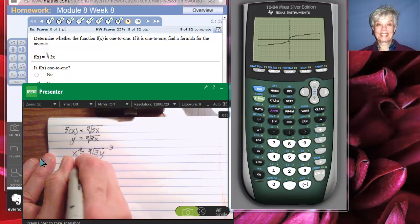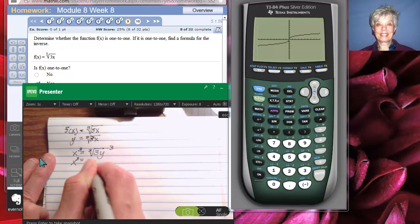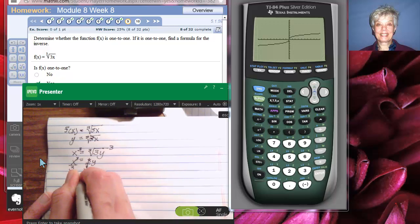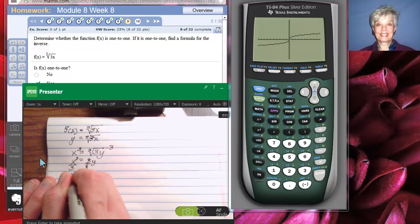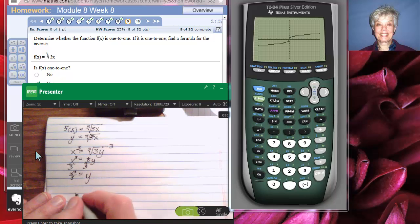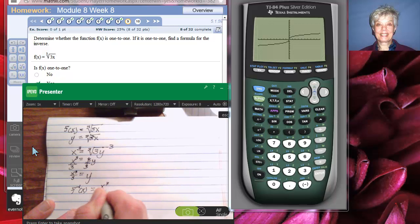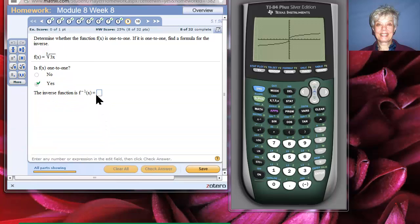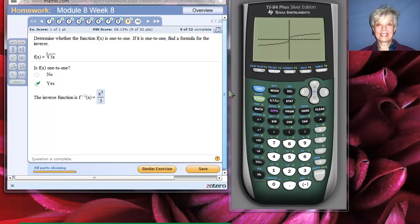So, I'll have x to the third equals 3y, then divide by 3 in order to get y by itself. Isolate y. y equals x to the third over 3. In other words, to write it the way my math lab wants you to write it, f inverse of x is going to equal x cubed divided by 3. I'll have x cubed divided by 3. And it doesn't seem to be asking me anything else. Let's go on.